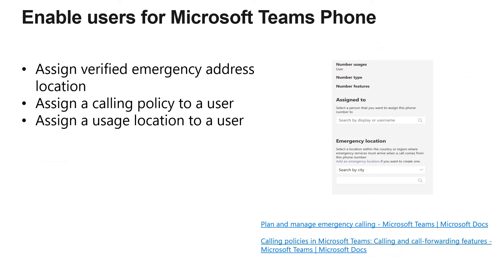Continuing with enabling users for voice in Microsoft Teams, the last three items are all about practical knowledge. Go to your Teams admin center and make these three configurations: assign an emergency address, assign a calling policy, and assign a usage location. Repeat these a few times to get familiar with the interface, because this segment of the exam is testing whether you know exactly which buttons to press and exactly where to go to make each configuration.